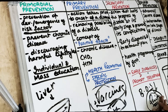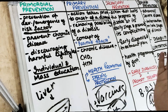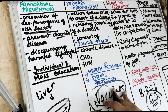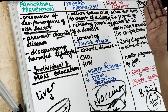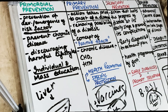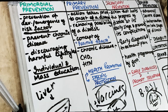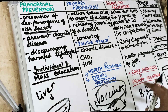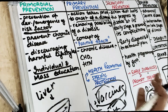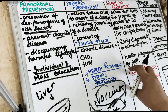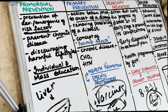Now comes secondary prevention. Secondary prevention is the action that stops the progress of the disease in the initial or incipient stages of the disease, and which can prevent the complications of the disease. Secondary prevention is largely the domain of clinical medicine — the medicines we give at the early stages. It is more expensive and less effective than primary prevention because now the disease has already occurred.